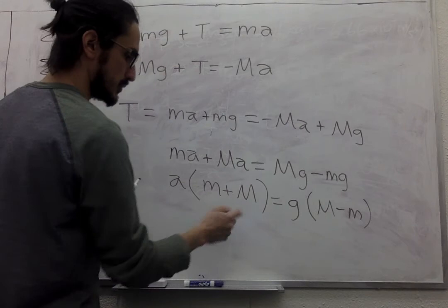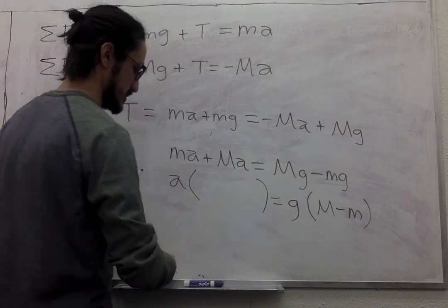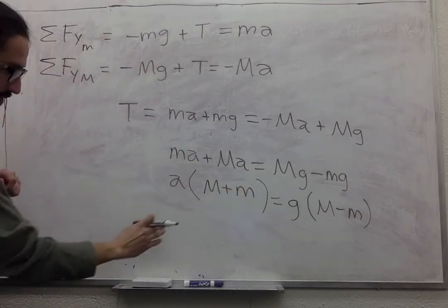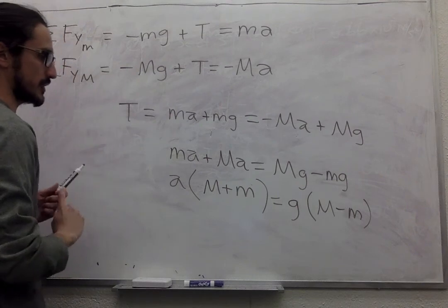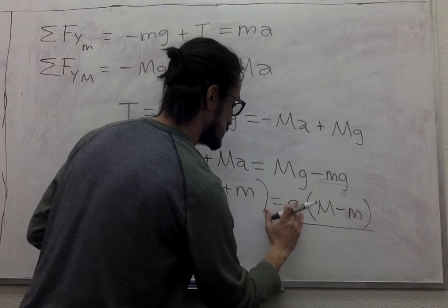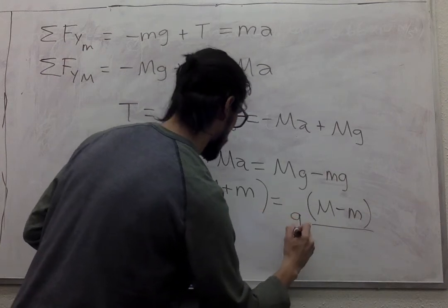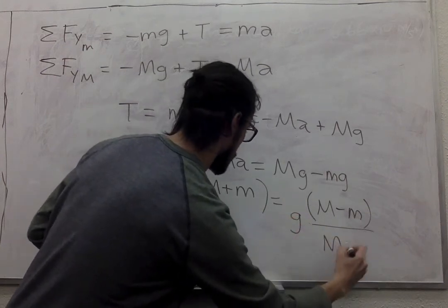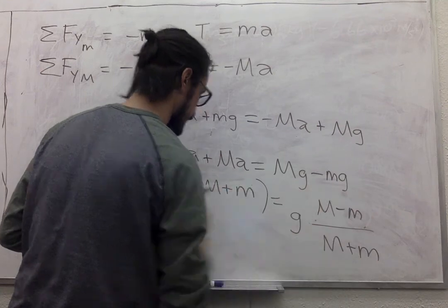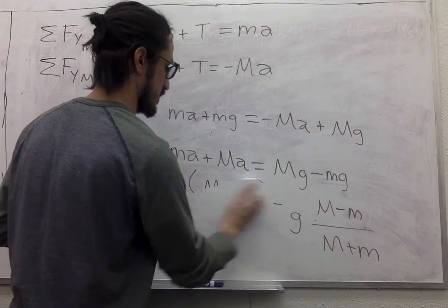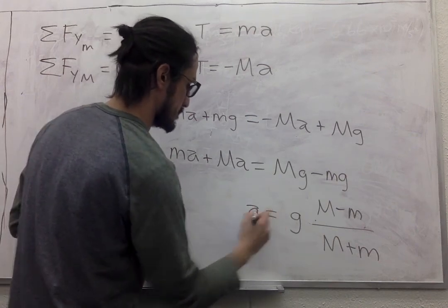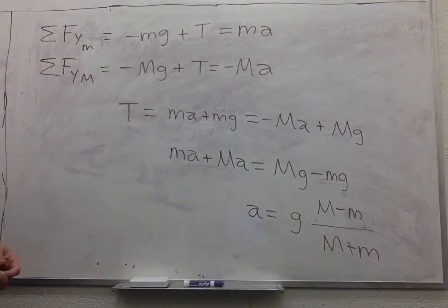Tension is, so a times little m plus big M equals g times big M minus little m. And we can switch this one so that it looks pretty. And then we can move this one over here, so that it's just a ratio. So that's the acceleration.